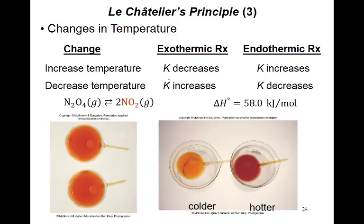The second factor is change in temperature. There are two types of reactions: exothermic and endothermic. Exothermic reactions are represented by a negative ΔH — heat is released from the system. Endothermic reactions absorb heat, represented by a positive ΔH. In this example the reaction is endothermic, so ΔH is positive.